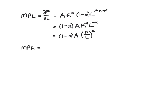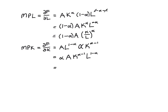Now let's calculate the marginal product of capital, which is dF/dK. The A and L parts are not affected. The exponent on capital comes down — giving alpha — and we subtract 1 from the exponent to get K to the alpha minus 1. Grouping terms with alpha and A up front, we get alpha times A times K to the alpha minus 1 times L to the 1 minus alpha, which we can write as alpha times A times (L over K) to the 1 minus alpha.